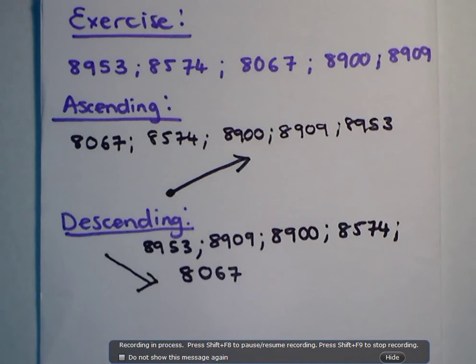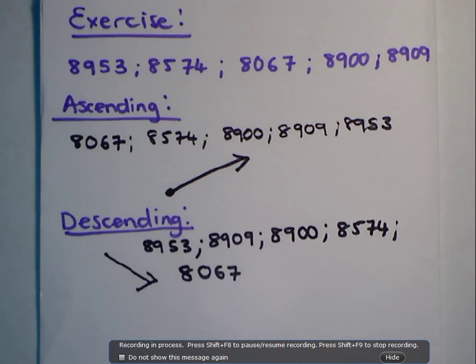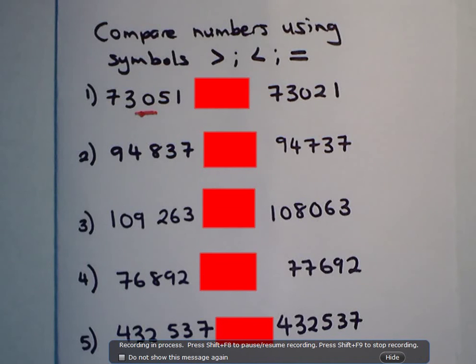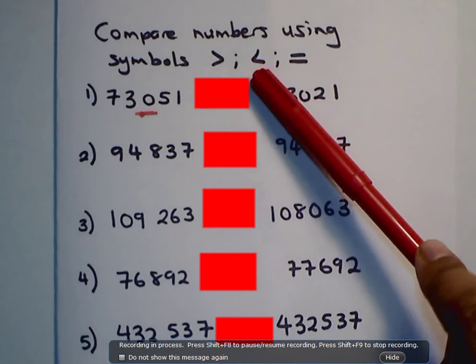That's all for now. Now, next, we're going to do comparing using the symbols less than, greater than, and equal to. Now, we're going to compare numbers using the symbol greater than, less than, and equal to sign. Now, remember, the greater than sign looks like this. The less than sign looks like an L.